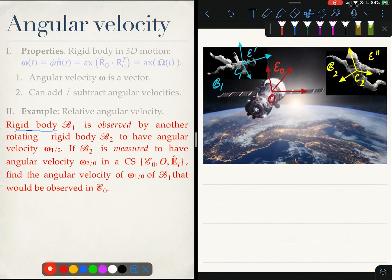For this let us consider this picture. Let us say I have a rigid body B1 which in this case is this astronaut over here. This astronaut is rigid body B1 and he is observed by another rigid body B2, which is this other astronaut over here.